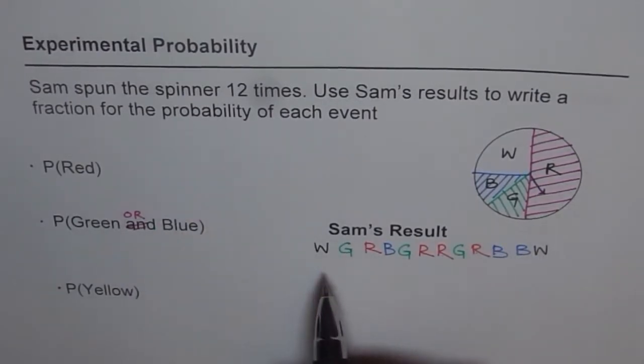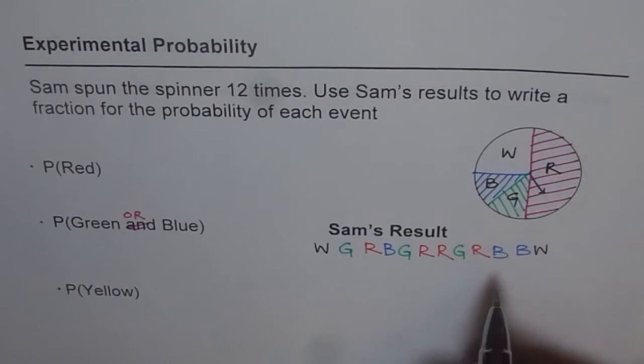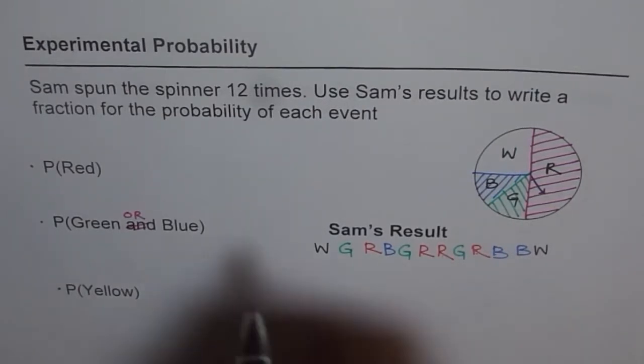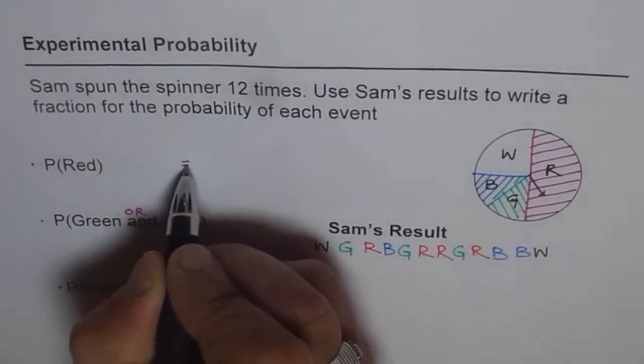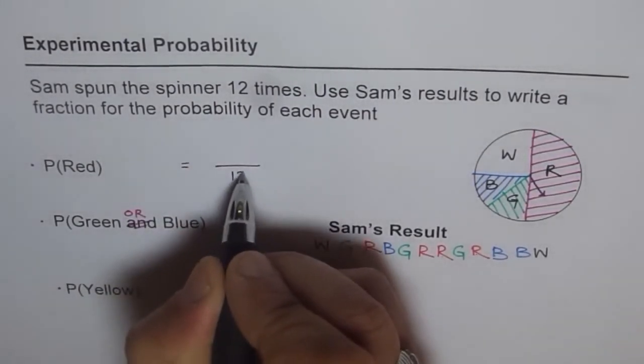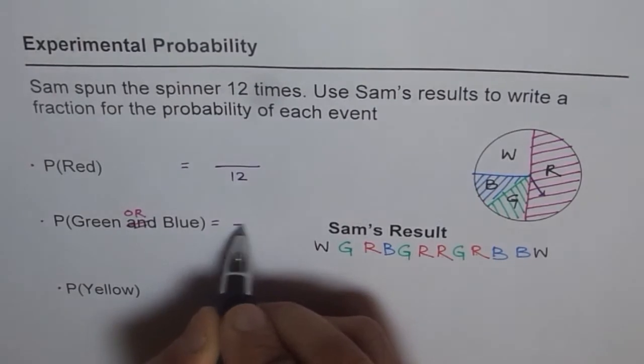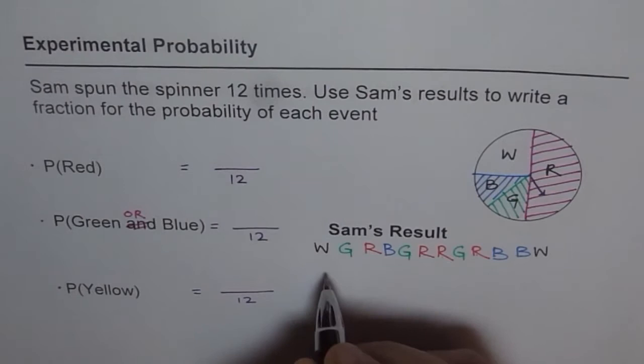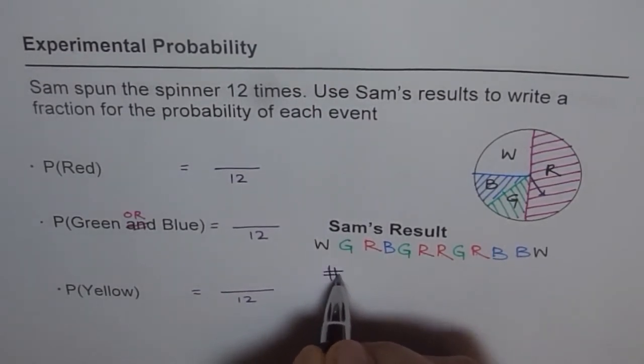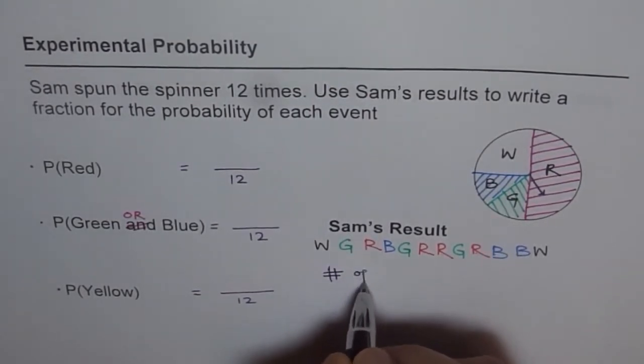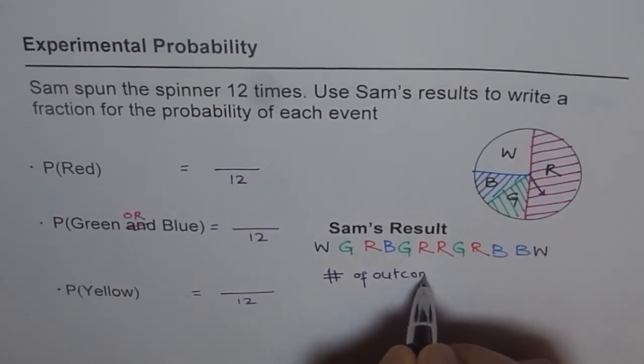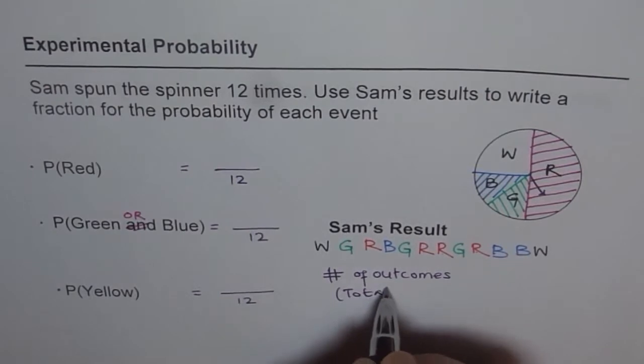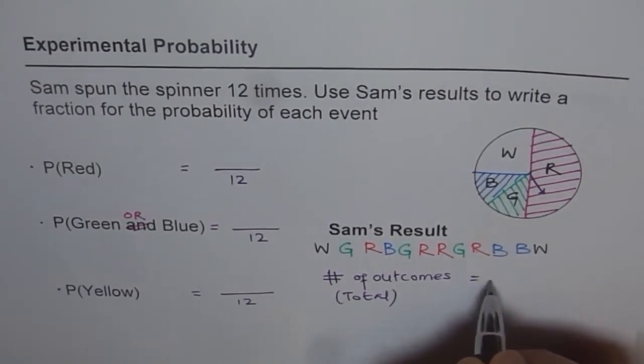So we know that total number of outcomes are 12. So in all these cases, in the denominator, we will have 12. So these are total number of outcomes, that is 12 for us.